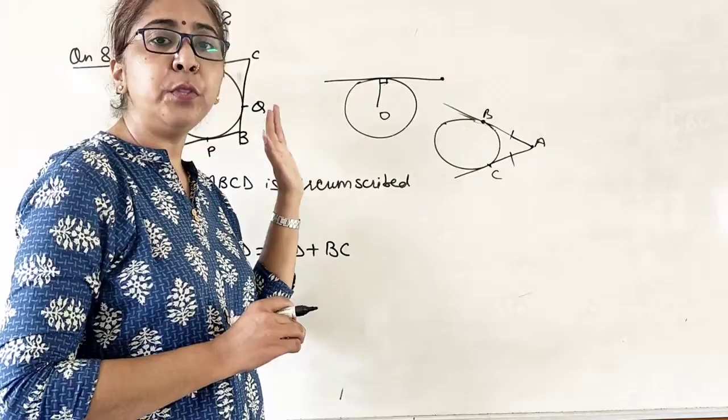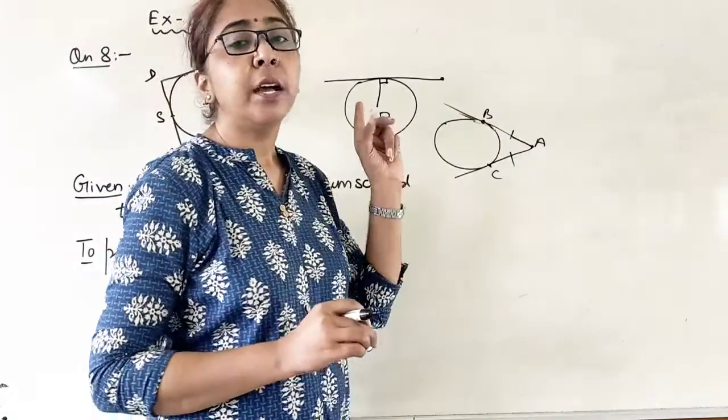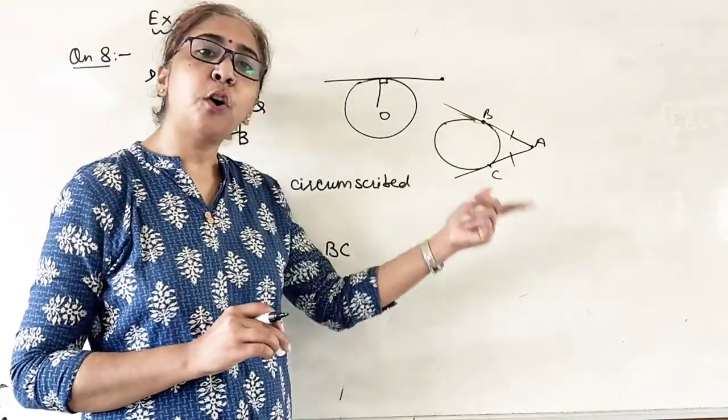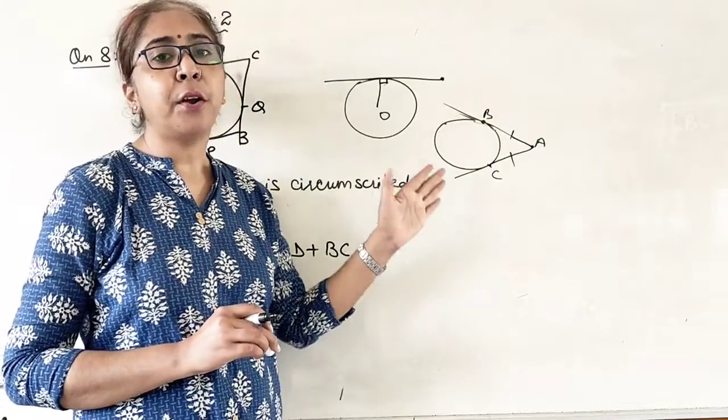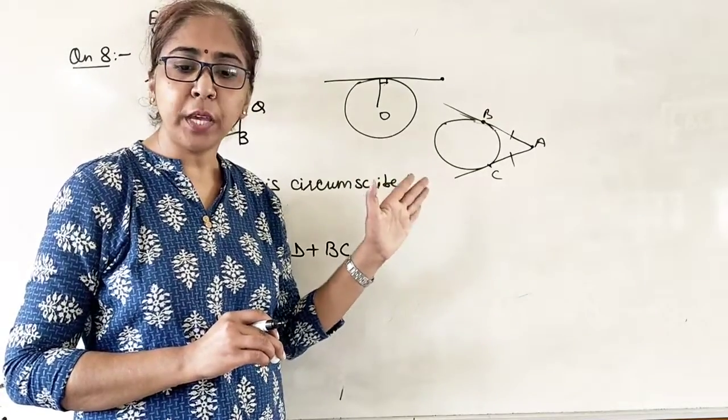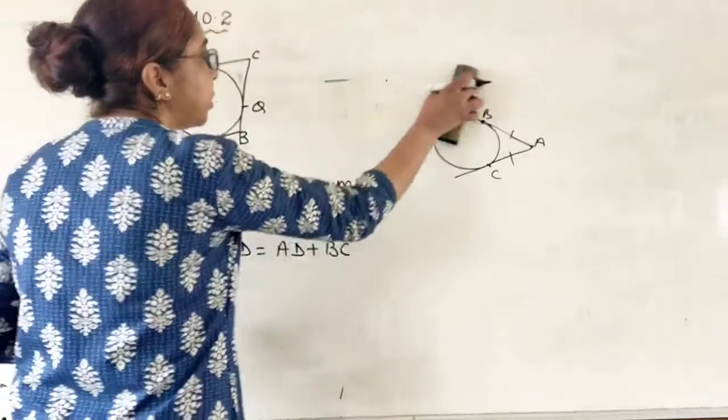First, radius is perpendicular to the tangent. Second, length of tangents drawn from an external point are always equal. So now we will do question number 8.